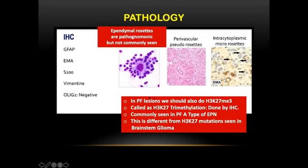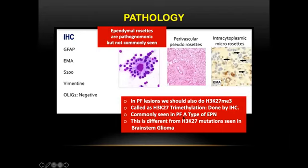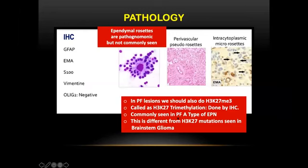In posterior fossa tumors, it is very important to perform H3K27 trimethylation by IHC. This is commonly seen in posterior fossa type A (PFA) ependymoma. An important distinction: H3K27 mutations are seen in brainstem glioma, but this is different from H3K27 trimethylation seen in PFA ependymoma. H3K27 trimethylation indicates PFA, while H3K27 mutation in brainstem glioma indicates a bad prognosis for that entity.